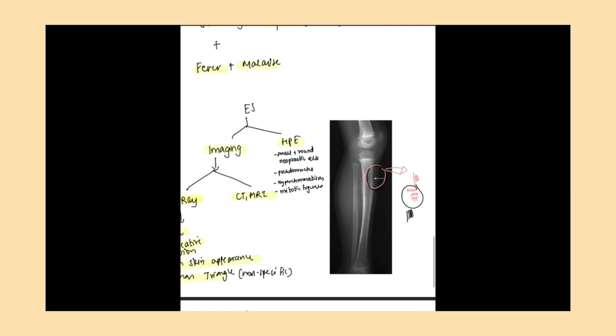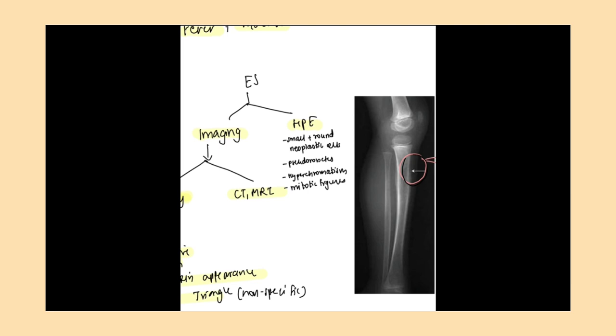Histopathological examination shows small and round neoplastic cells, hyperchromatism, and mitotic figures, which are basically features of any neoplasia. Pseudorosettes are seen here because of central clearing of the nucleus of the cell.